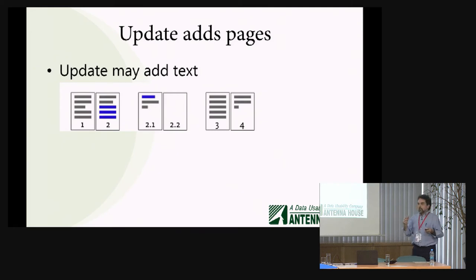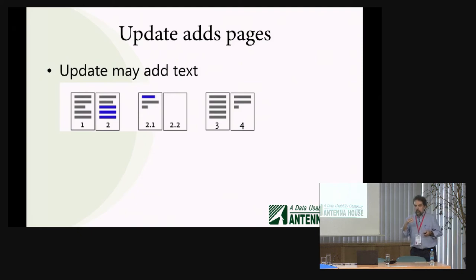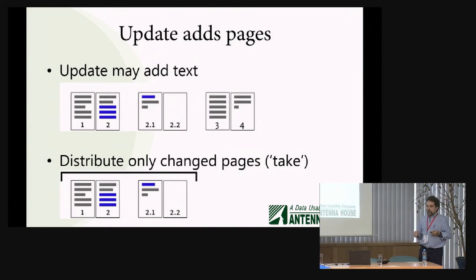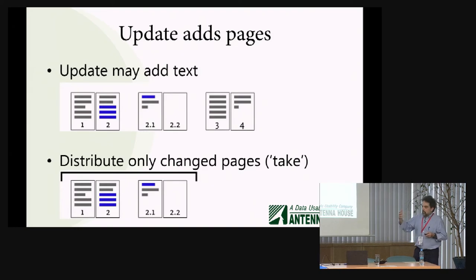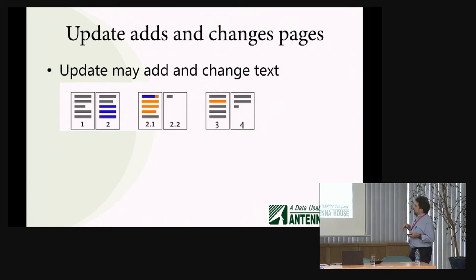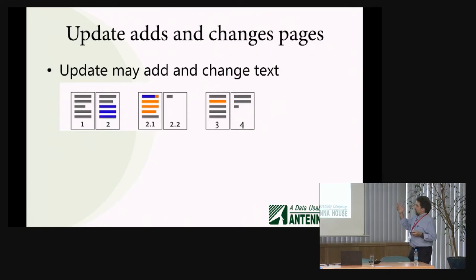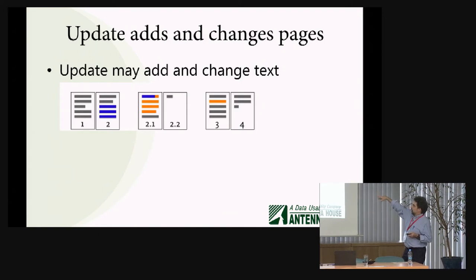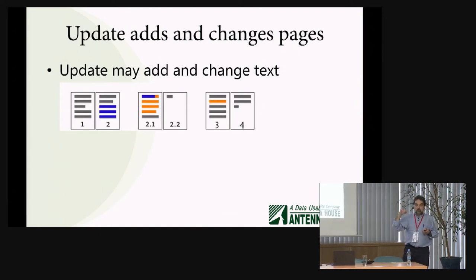It's all part of the new green publishing. It reduces the frustration level of people who have to update these documents. The take, as they say in Municode speak, is what you distribute — those two pages. And then suppose we make another update. This time shown in orange, we push content onto page 2.2 and we've also found a typo on page three.